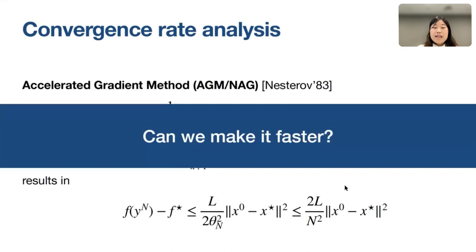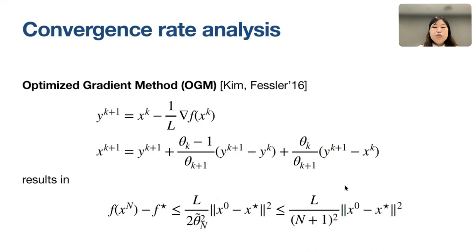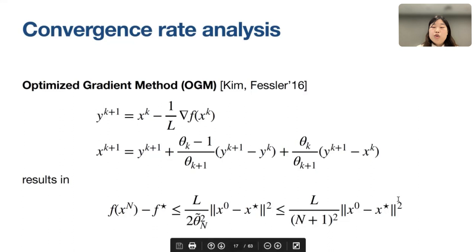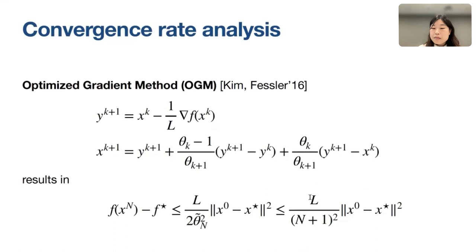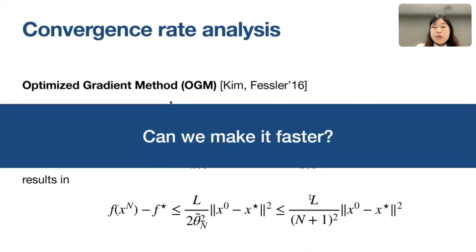Can we go further? In 2016, Kim and Fessler developed the Optimized Gradient Method (OGM), which adds an additional correction term and results in the same order bound but with the constant factor of 2 removed. AGM and NAG have the rate with a factor of 2, whereas OGM achieves a rate with no extra constant factor — so OGM is faster in theory.